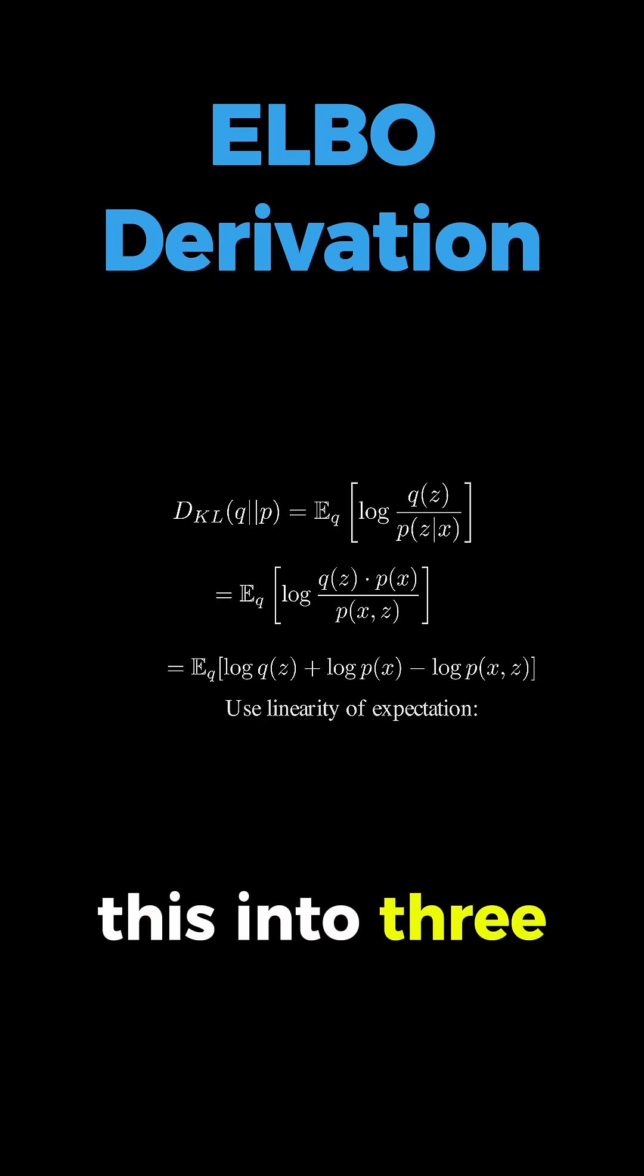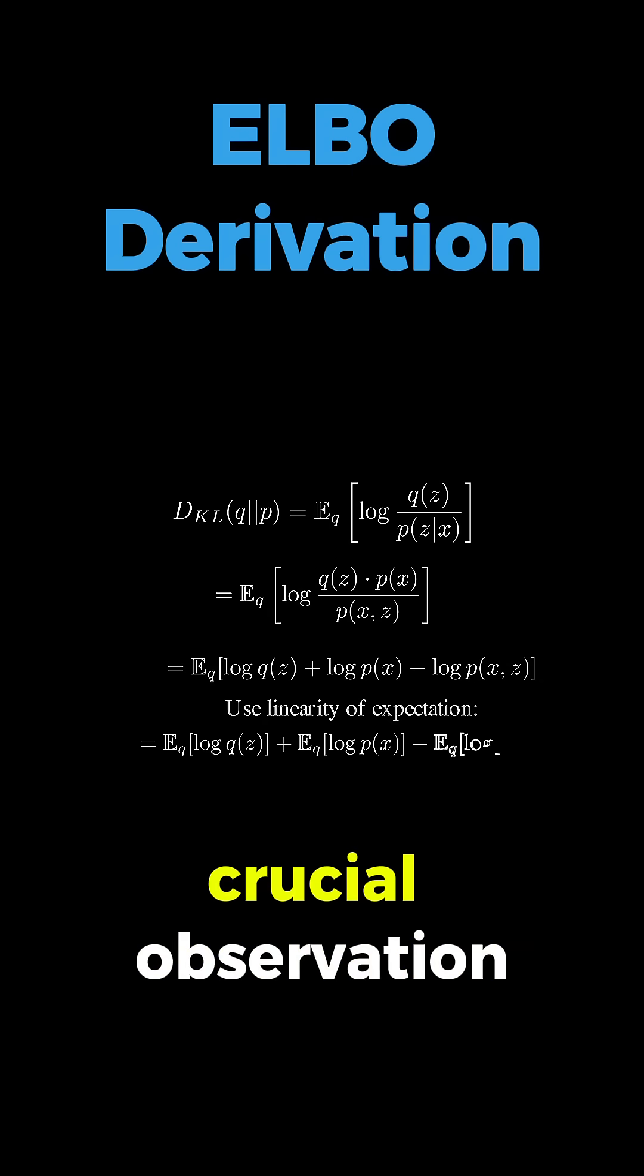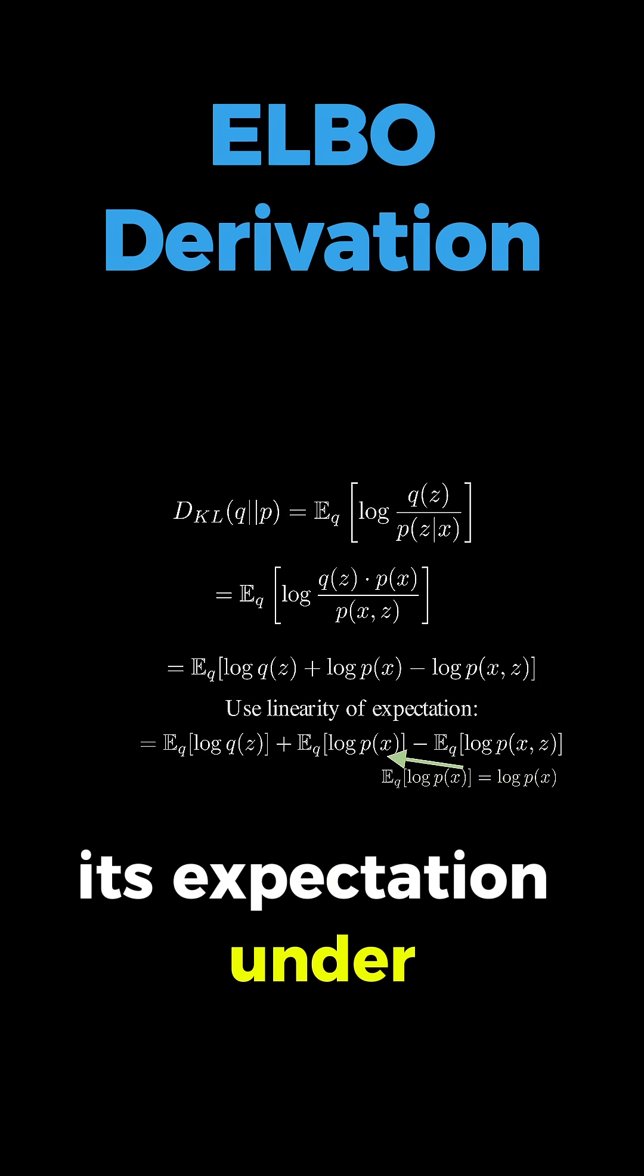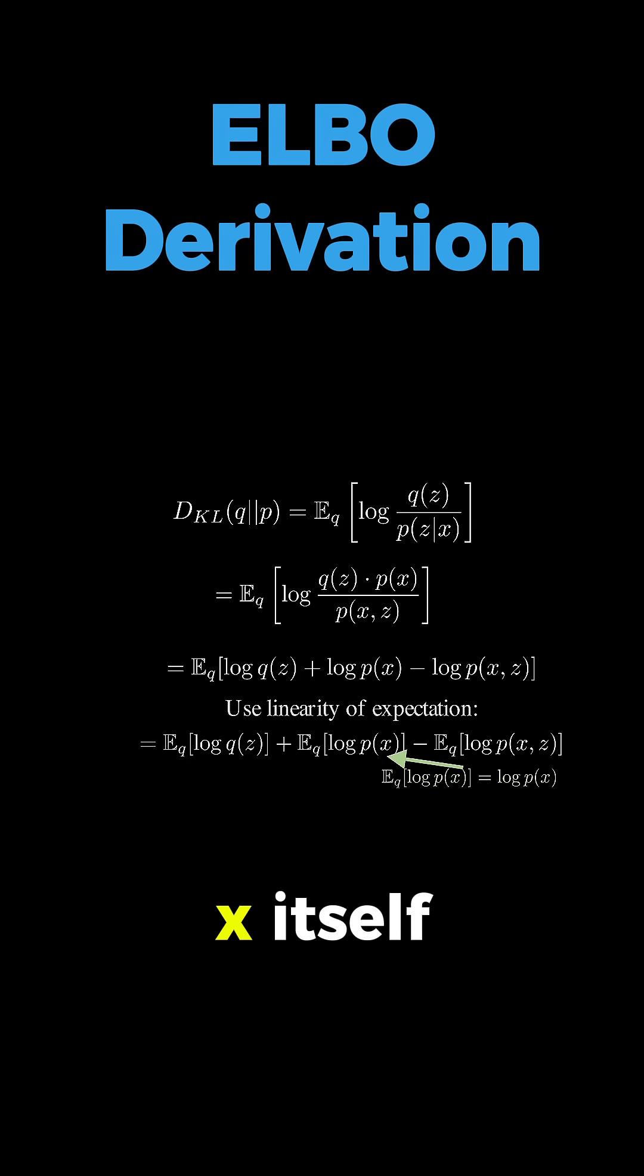Using the linearity of expectation, we can separate this into three expectations, and here's a crucial observation. Since P of X doesn't depend on Z, its expectation under Q is just log P of X itself.